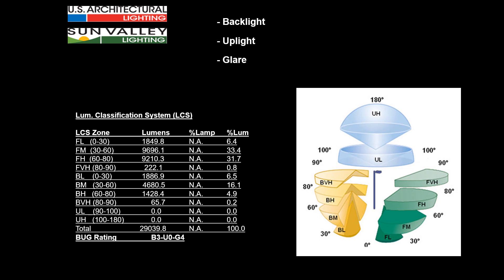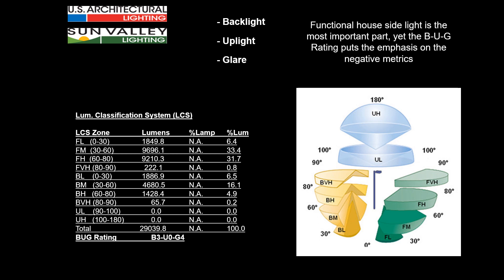For example, a rating of B3U0G4 — the U0 comes from the fact that there is no uplight. If you look at the UL and UH values, there's zero light emitted in those areas, giving you a zero rating. The G4 measures the light in the FH and FVH zones. Interestingly, the functional house-side light is the most important part because that's where your foot-candles on a site are generated. Yet the BUG rating only puts emphasis on negative metrics — it doesn't tell you how well a luminaire is performing, only what it's producing in areas where light is not desirable.